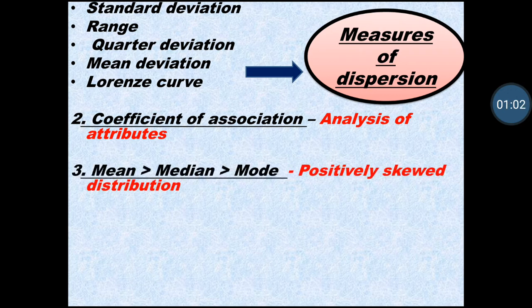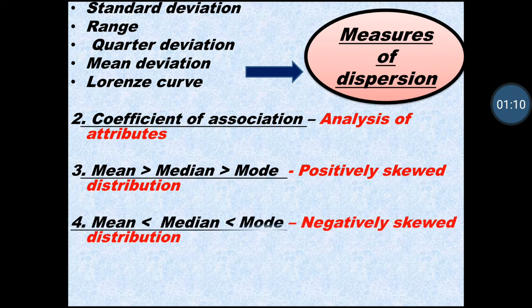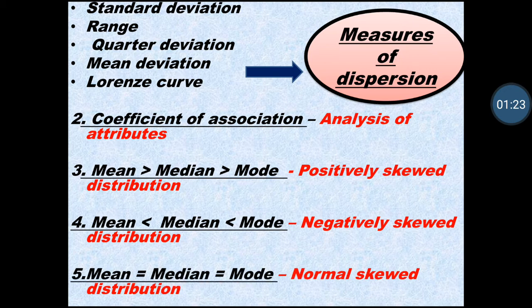Next is coefficient of association — the answer will be analysis of attributes. Then, when mean is greater than median and median is greater than mode, there is a positively skewed distribution. When mean is less than median and median is less than mode, there is a negatively skewed distribution.